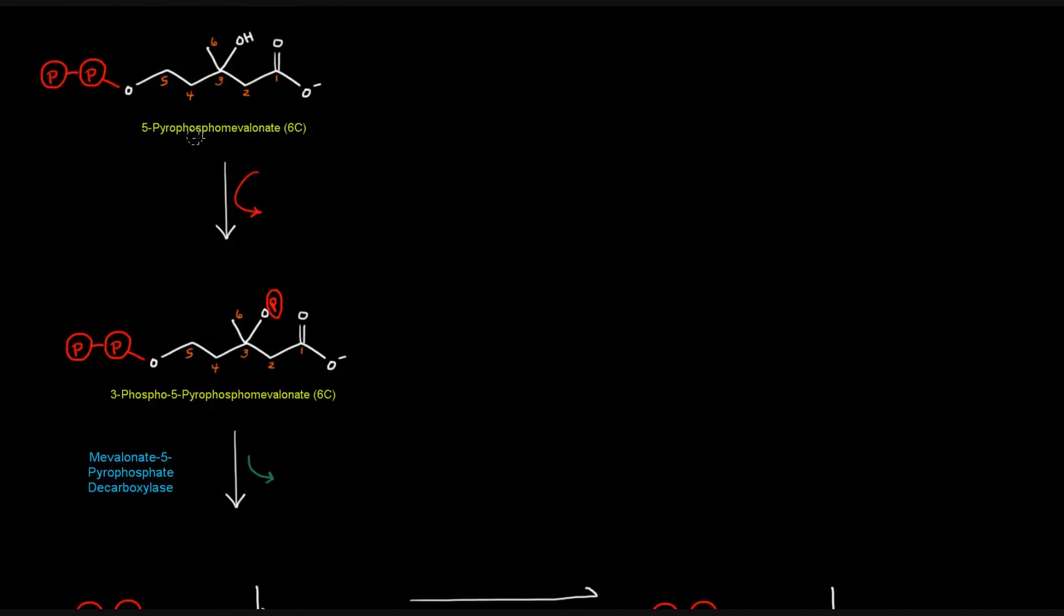Next up, we have 5-pyrophosphomevalonate, and we're going to convert it to 3-phospho-5-pyrophosphomevalonate, which basically just has a phosphate group attached to the OH group on the third carbon. And so again, another phosphate will be coming from an ATP. And in this case though, the enzyme catalyzing this reaction has a little bit of a confusing name: mevalonate 5-pyrophosphate decarboxylase. The mevalonate 5-pyrophosphate part makes sense because we're talking about 5-pyrophosphomevalonate that it's acting on. But the decarboxylase part doesn't make sense until you look at this next step because this enzyme kind of catalyzes both of these steps at once.